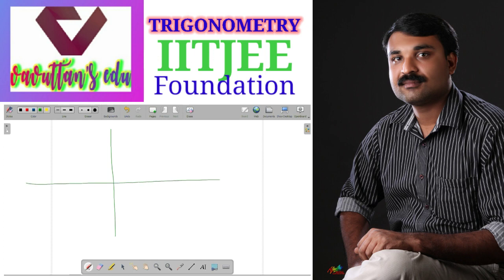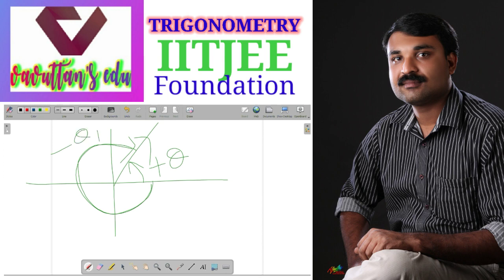To generalize: an angle measured in the anticlockwise direction is denoted by plus theta, while an angle measured in the clockwise direction is treated as negative, denoted by minus theta. The positive real axis represents 0 degrees, and the positive y-axis makes an angle of 90 degrees.